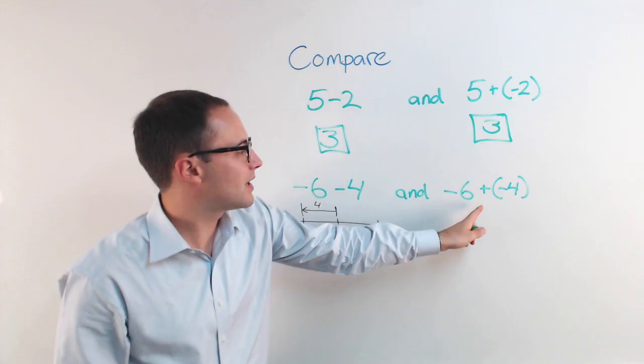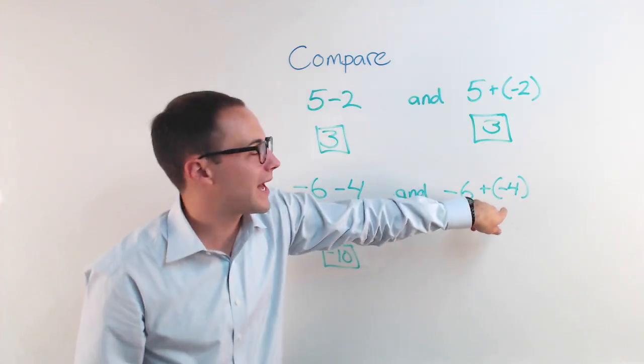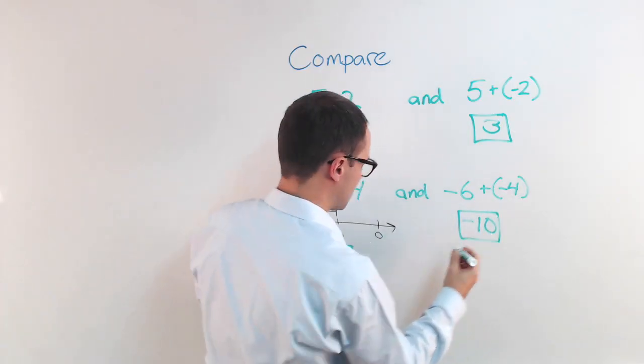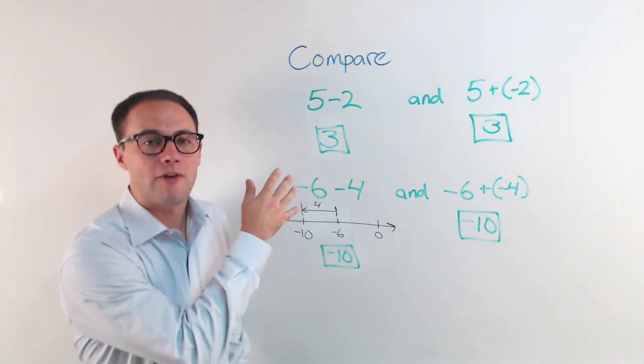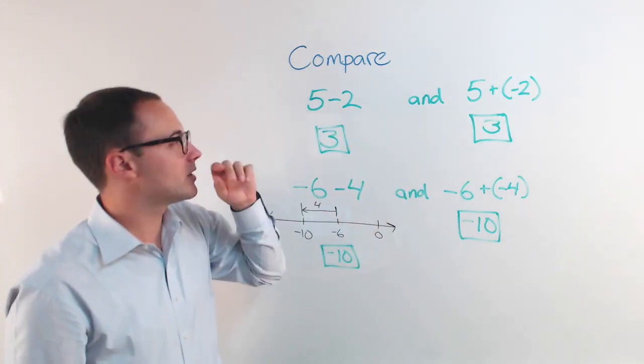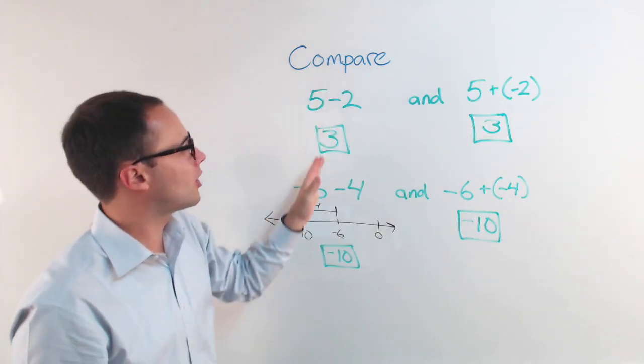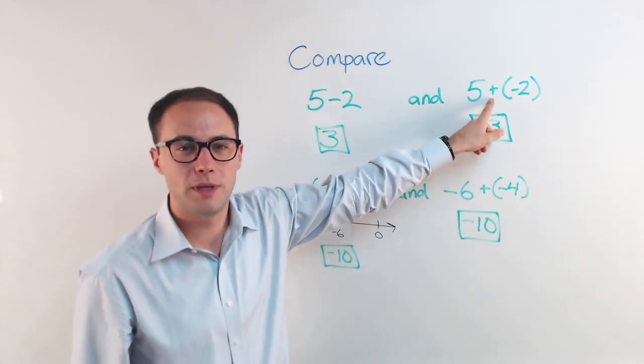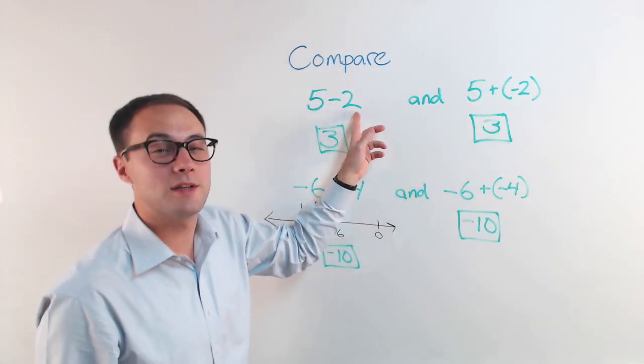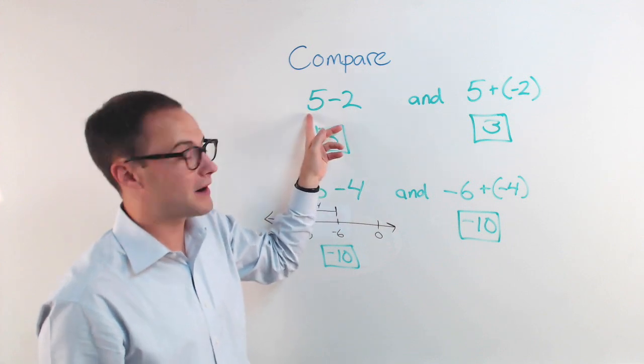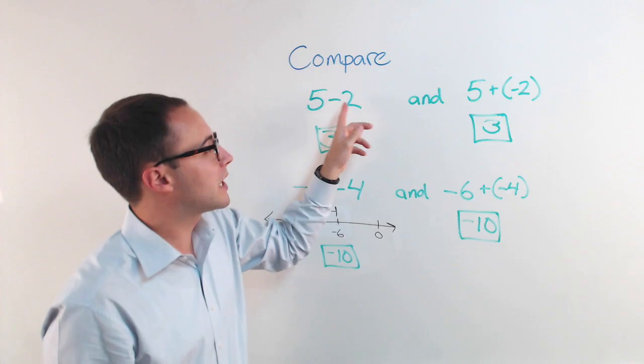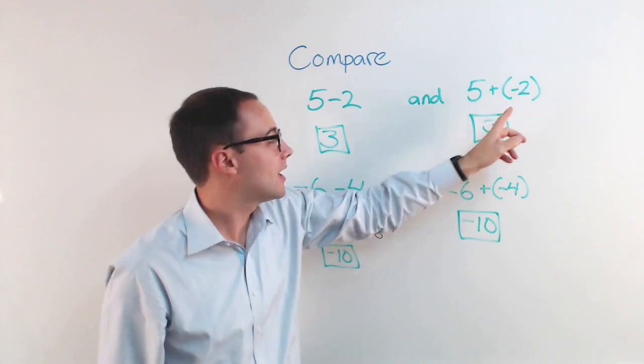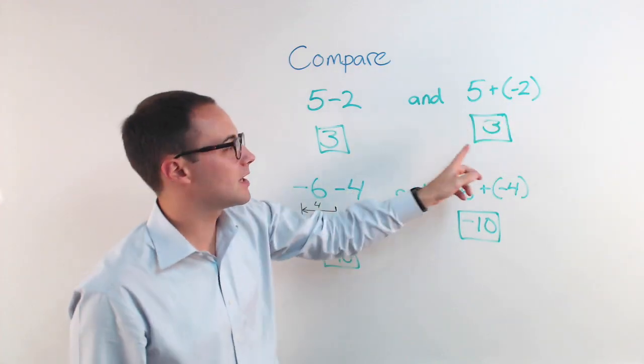So negative 6 minus 4 would be negative 10. And here, negative 6 plus a negative 4, they're both negatives. When we add them together, my answer is going to be negative. So, that's also going to be negative 10. Now, if I look at this, hopefully you notice that what changed from this left column to the right is that the subtraction became addition. This was a positive 2, this is positive 5 minus a positive 2. The subtraction changed to addition, the positive 2 became a negative 2. And notice we got the same result, we got the same answer.